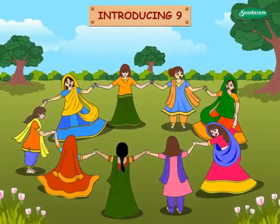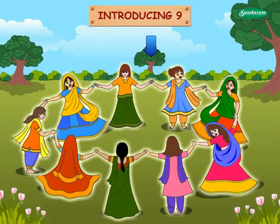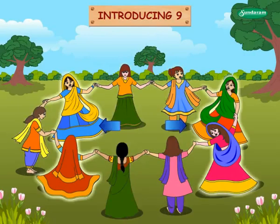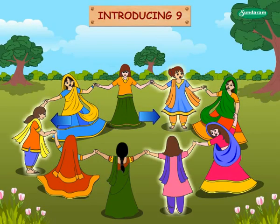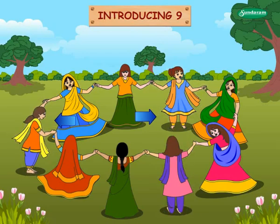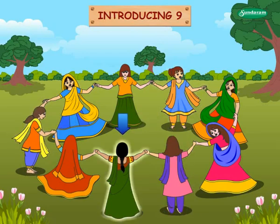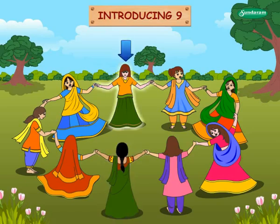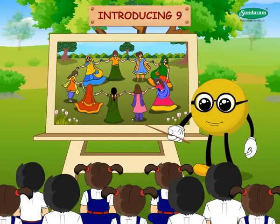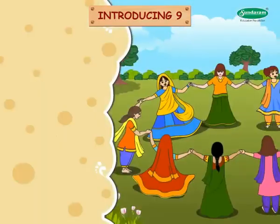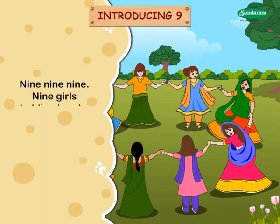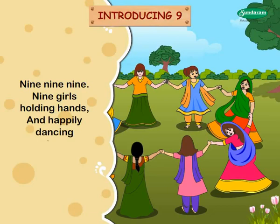Nine girls are dancing in a circle. Four girls are wearing ghaghra choli, and three girls are wearing salwar kurta, one is wearing a sari, and one in a long skirt and top. Very good. Let us now sing a number jingle for nine. Nine nine nine — nine girls holding hands and happily dancing too.